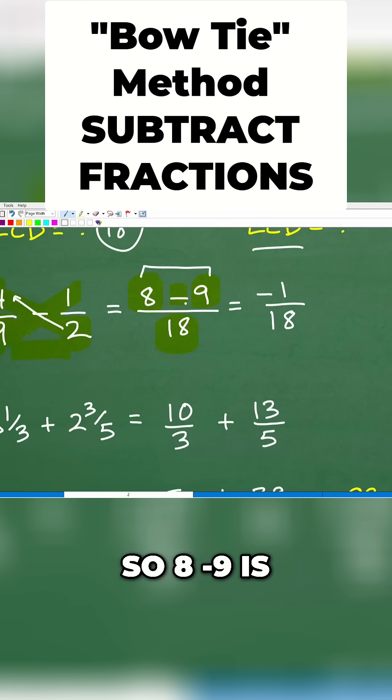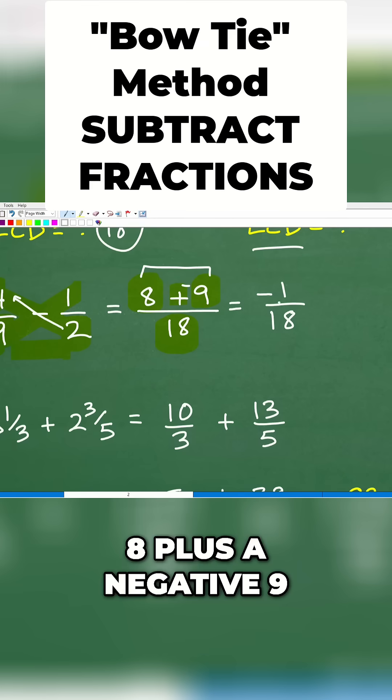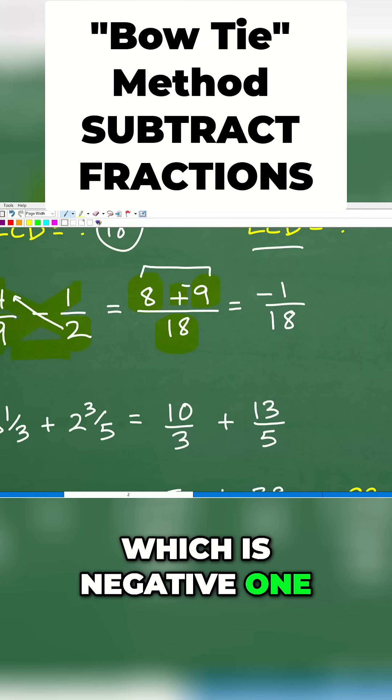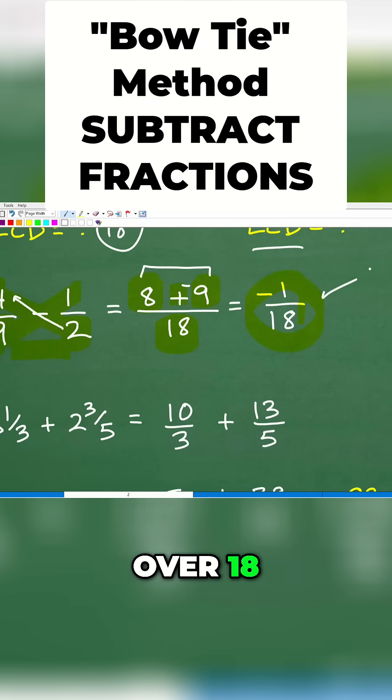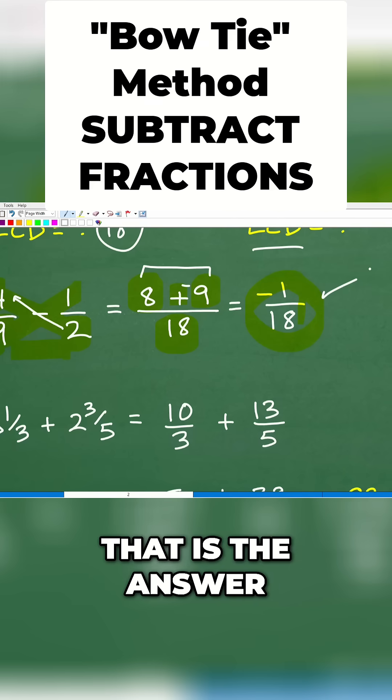So 8 minus 9 is the same thing as 8 plus negative 9, which is negative 1. So the final answer here is negative 1 over 18. That is the answer.